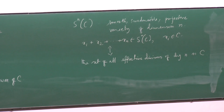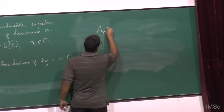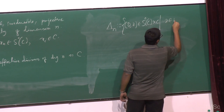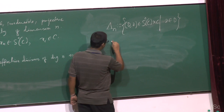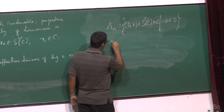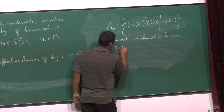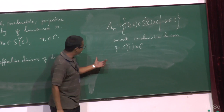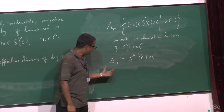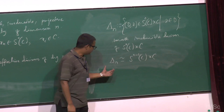S^N(C) is in one-to-one correspondence with the set of all effective divisors of degree N on C. Consider the subset Δ_N of S^N(C) × C such that the point Z is in the support of D. One can show this is a smooth, irreducible divisor in S^N(C) × C, and in fact Δ_N is isomorphic to S^{N-1}(C) × C. It is called the universal effective divisor of degree N on C.